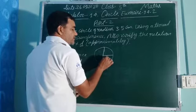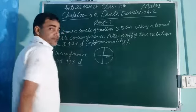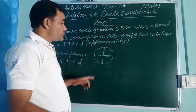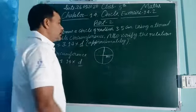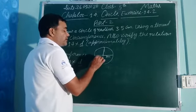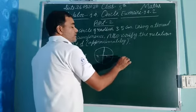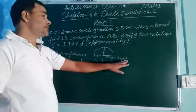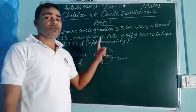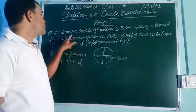D means diameter होता है। Diameter, radius का double होता है। जैसे आप देख रहे हैं — यहां से यहां तक radius है, मान लेते हैं यह 3 cm है। और इसको दूसरी साइड भी बढ़ा दिया जाए — दोनों साइड में circle को join कर दीजिए — तो जो length बनती है, that is diameter। एक साइड 3 cm है तो दूसरी साइड भी 3 cm होगी, तो diameter = 3 + 3 = 6 cm। इसी 6 से 3.14 multiply करेंगे तो उस circle का circumference find हो जाएगा।